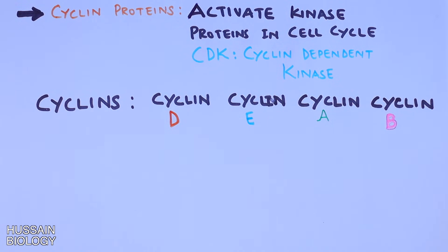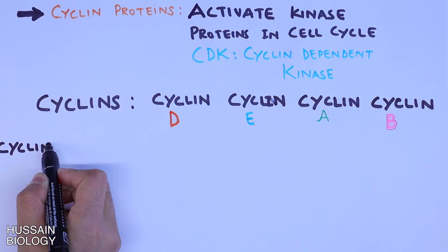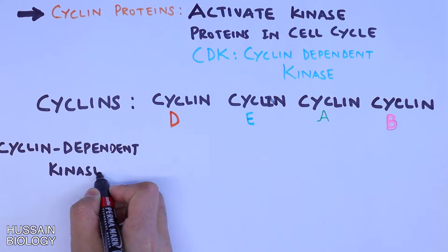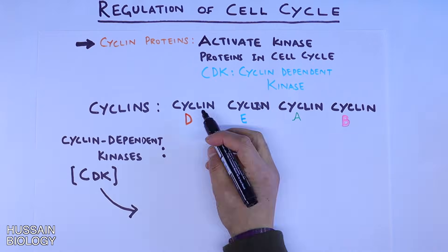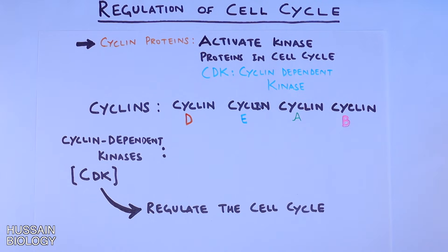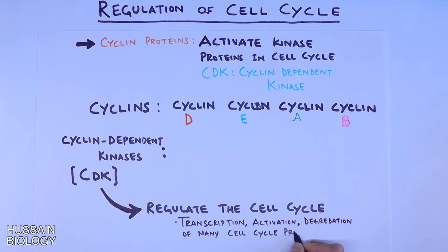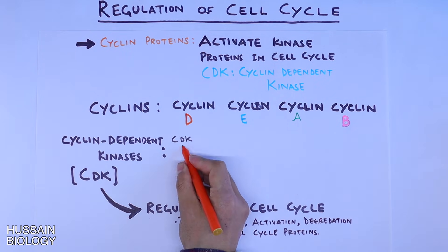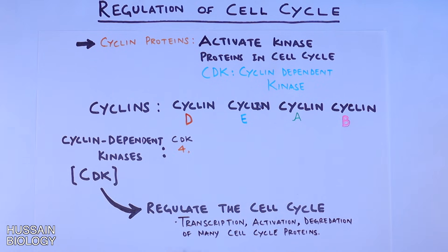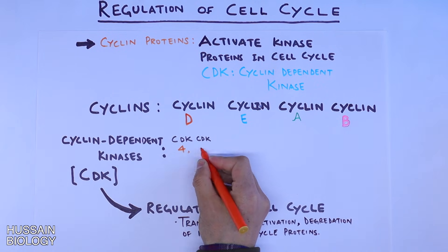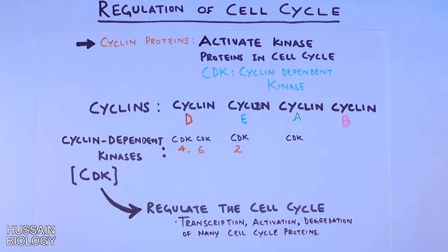We also have the kinase proteins called cyclin dependent kinases, which regulate the cell cycle through transcription, activation, and degradation of many cell cycle proteins. Just as we have different cyclin proteins, we have different kinase proteins: CDK4, CDK6, CDK2, and CDK1.